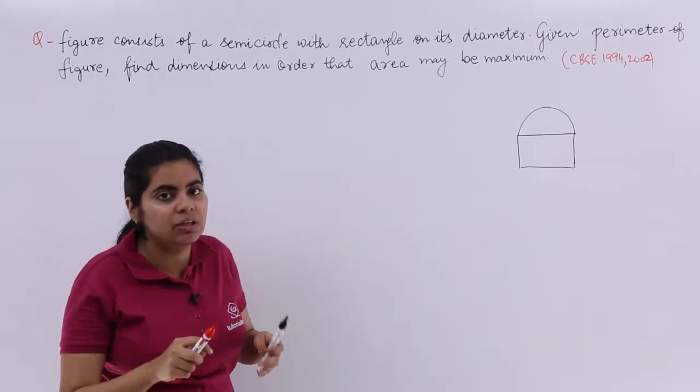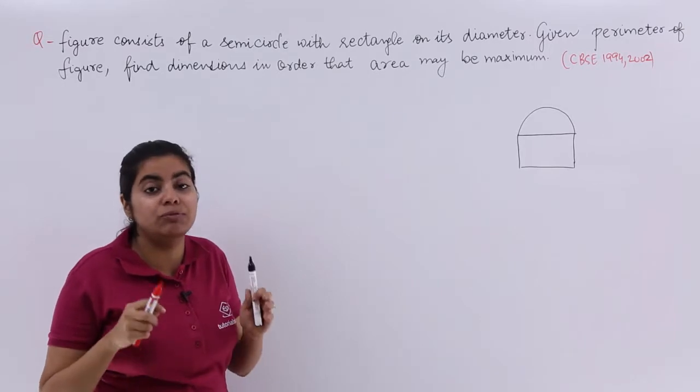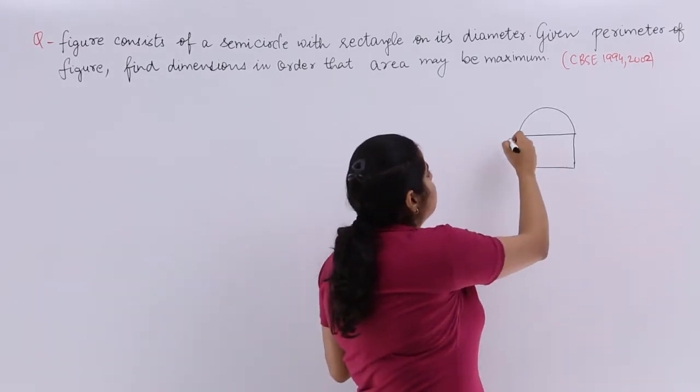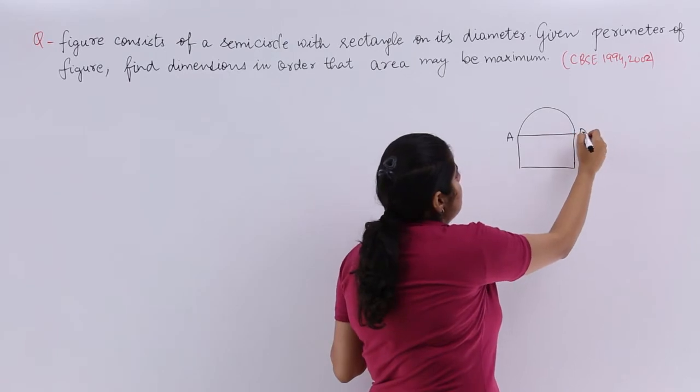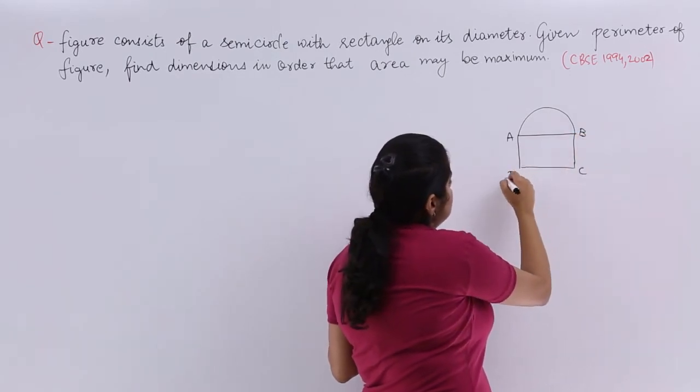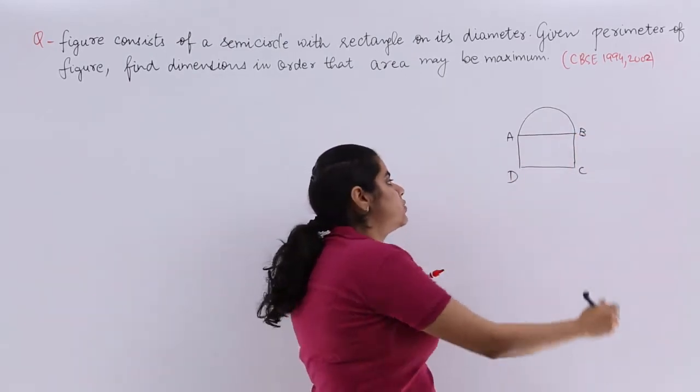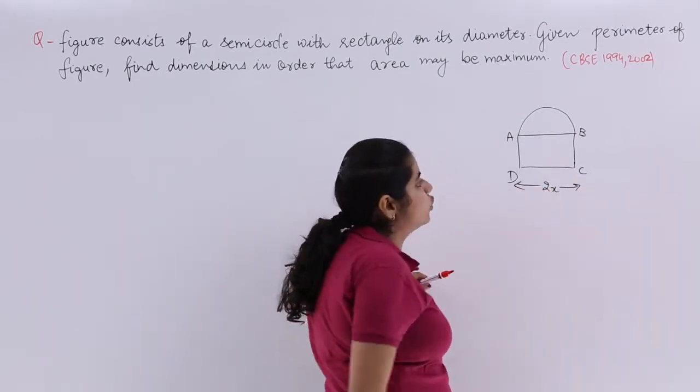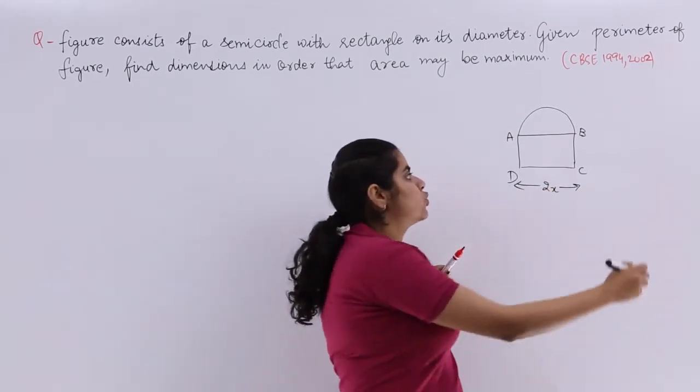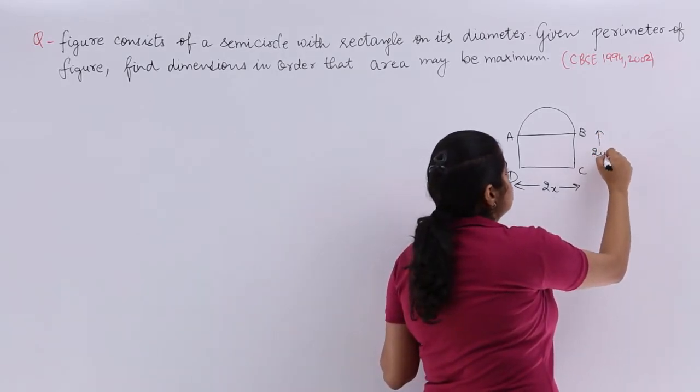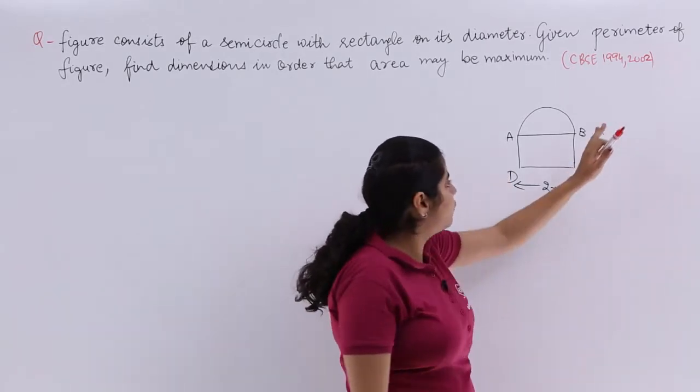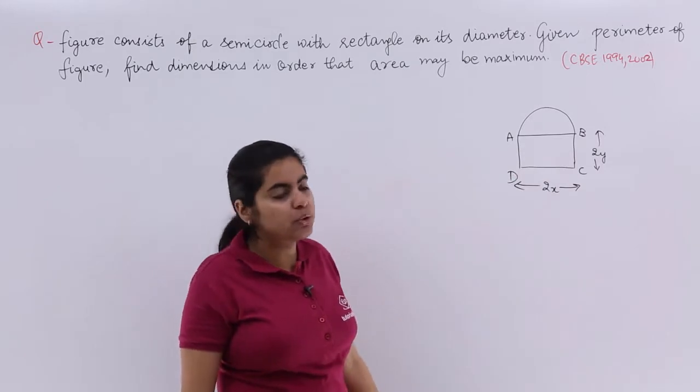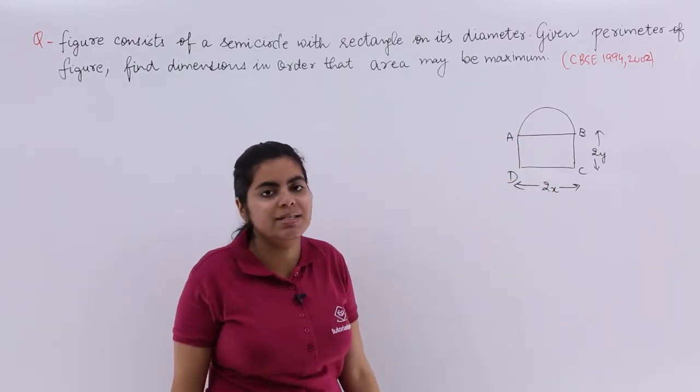So perimeter given, maximize the area, that means you have to differentiate the area. Now if I have to name A, B, C, D and if I say that I have dimensions of CD as 2x, dimensions of BC as 2y. Then definitely BC is equal to AD is equal to 2y. AB is equal to CD is equal to 2x.